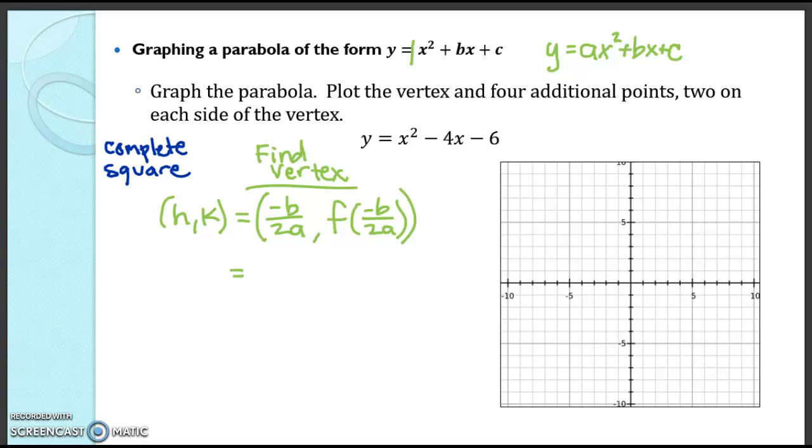So (h, k) is going to be... Let's first actually identify a. A is 1. We have a 1 there. B is negative 4, and c is negative 6, because of my equation. I have positives right there.